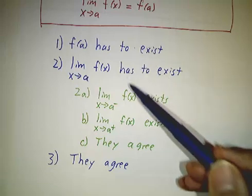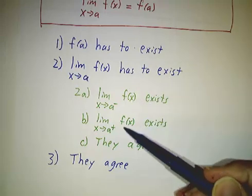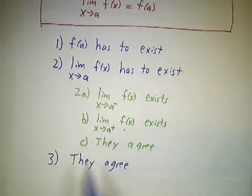In other words, the value of the function, the limit from the left, and the limit from the right all agree. If that's the case, we say the function is continuous.